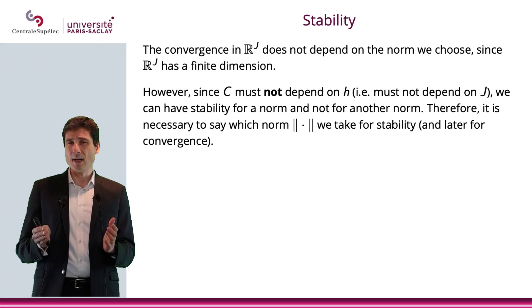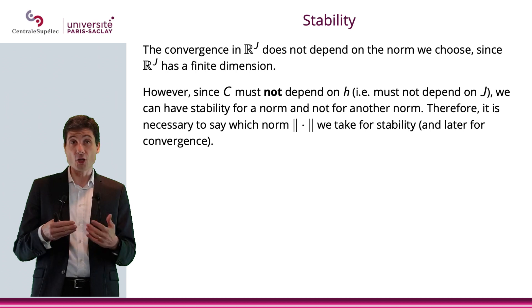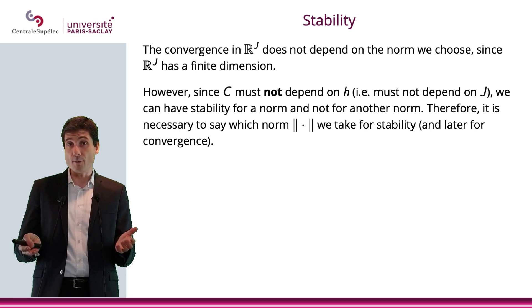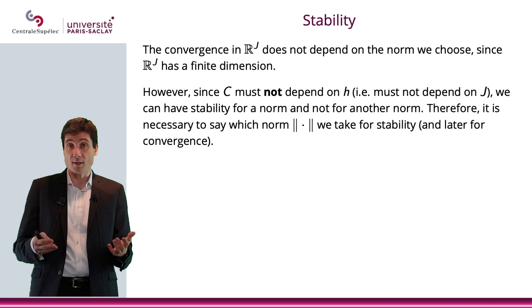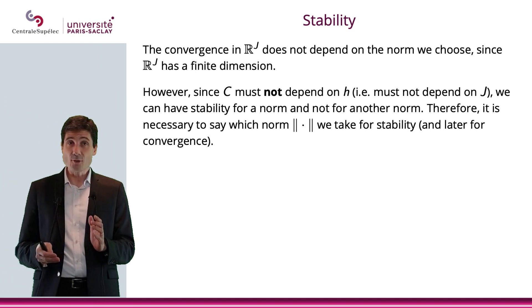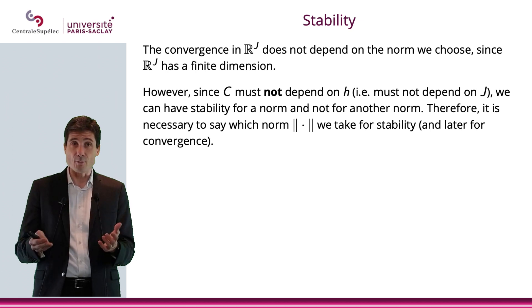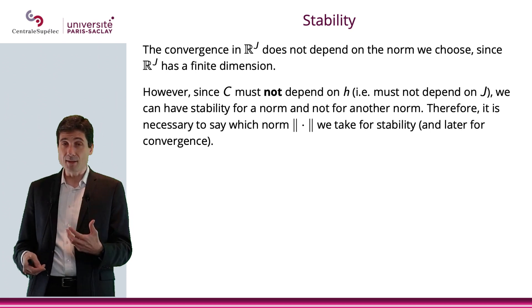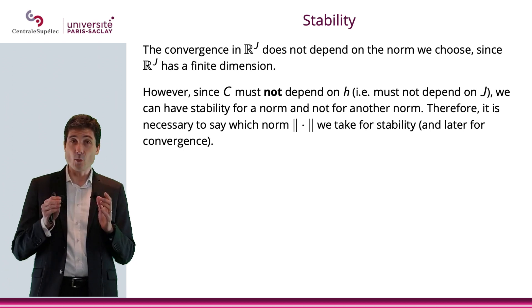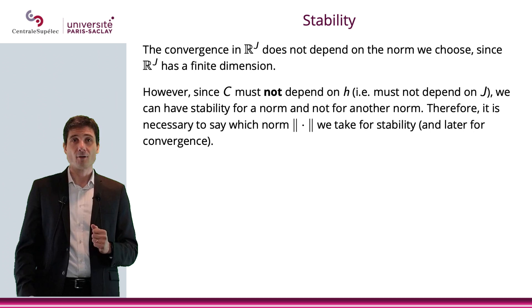Some of you are probably thinking: why do I need to specify which norm I choose, since R^j is a finite-dimensional space and all norms are equivalent? However, we need a constant C that is independent of h. So we can have stability for one norm and maybe not for another. It will be necessary to specify which norm we take for stability and later for convergence.